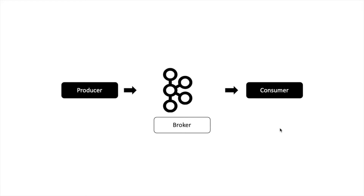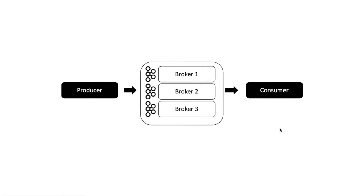Now producer may be sending a huge amount of data which may be difficult to store on a single machine. So we would like to have multiple brokers on which data can be stored. In actual Kafka will have a lot of brokers storing huge amounts of data. A group of these brokers is called a Kafka cluster.